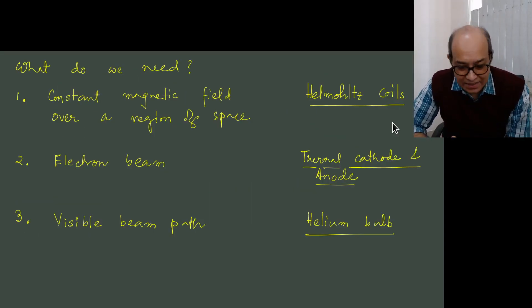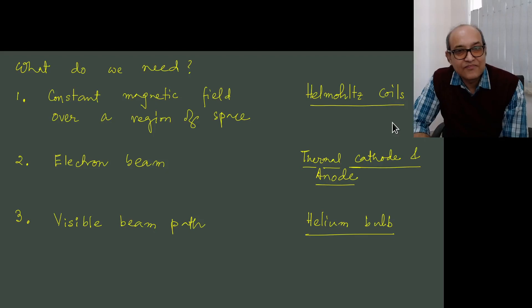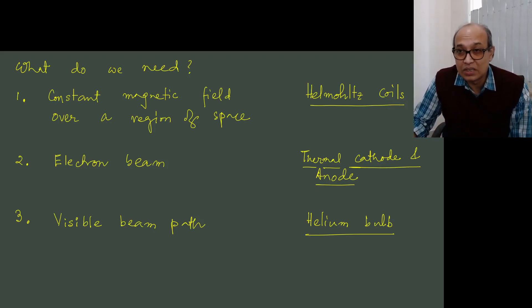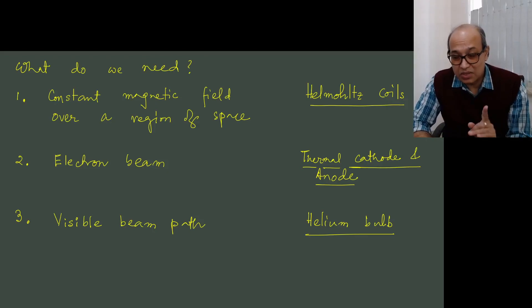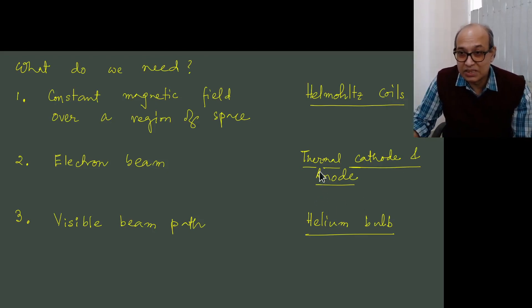So what we need is the following. We need three major items. One is we need a constant magnetic field over a region of space, and that we can easily create using a Helmholtz coil. We know a pair of coils, current going in the same direction, gives you nearly constant magnetic field inside. And then we need an electron beam. To create the electron beam as we mentioned, we need a thermal cathode and an anode.